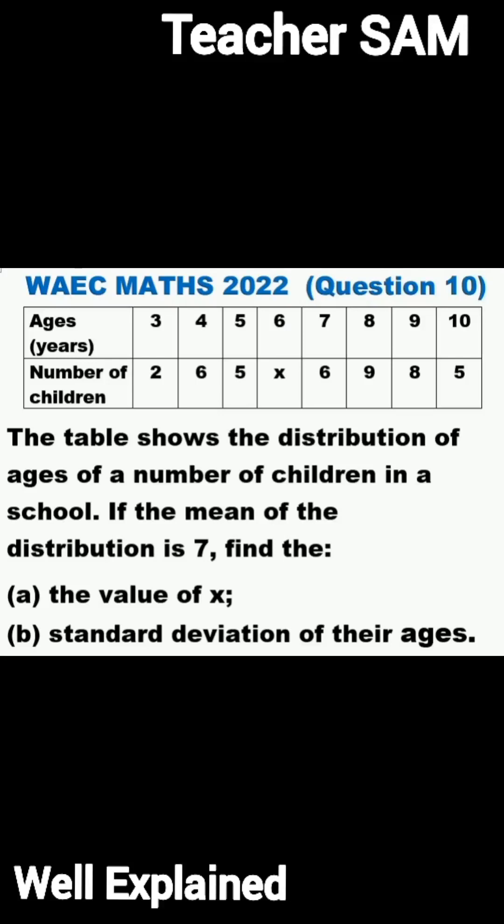Question 10. The table shows the distribution of ages of a number of children in a school. If the mean of the distribution is 7, find: A, the value of X, and B, the standard deviation of their ages.